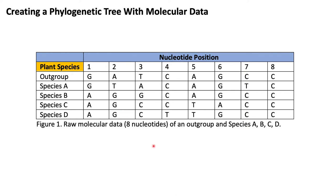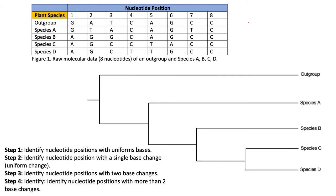We are given a general data set with eight nucleotide positions. We have an outgroup being compared with four different species, each having eight nucleotide positions where we see a nucleic acid — either A, G, C, or T — at each position. To determine where base changes occur on a given phylogenetic tree, we follow four steps. Step number one is to identify the nucleotide positions with uniform bases.